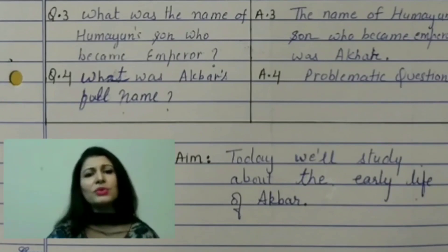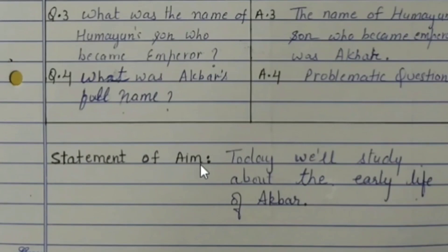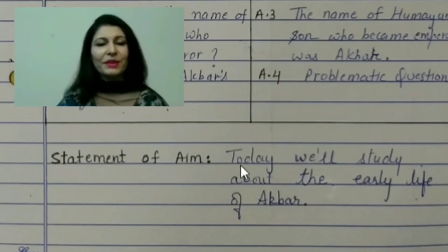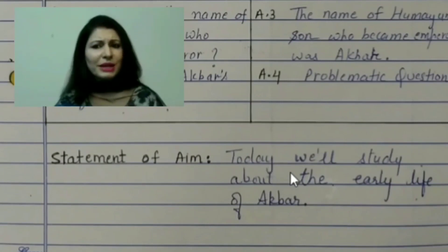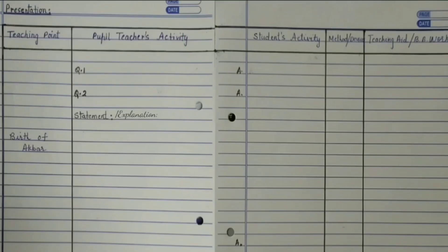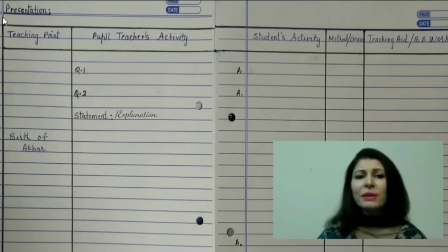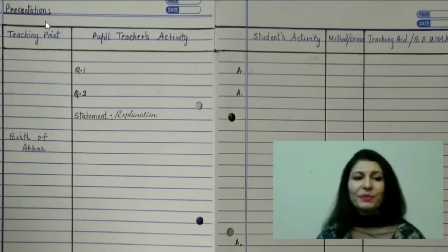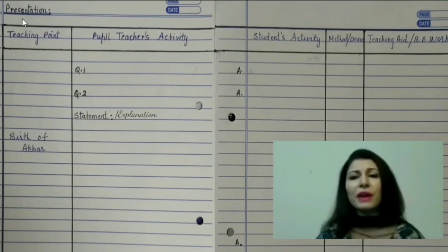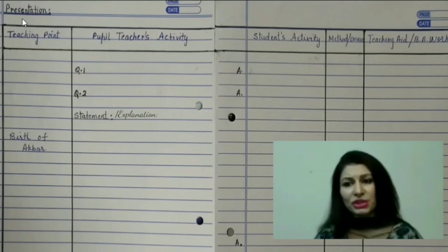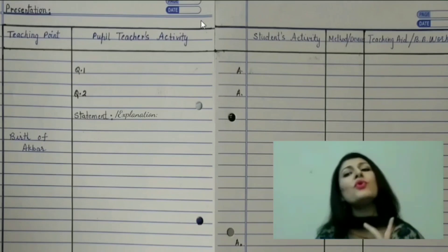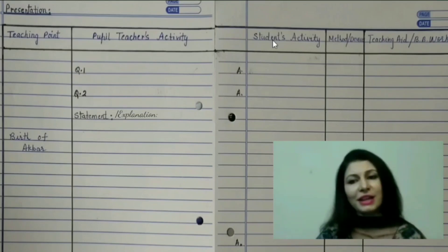And now you will declare your topic, so the next heading would be statement of aim. Here you can say: so students, today we will study about early life of Akbar. Now the next heading will be presentation. Till the statement of aim, you have to write things on a single punch sheet. But for the presentation part, you need two punch sheets together at a time.